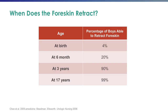A common question is when it is typical for the foreskin to retract in a child. Looking at this diagram, only four percent of foreskins will spontaneously retract at birth, whereas by three years of age 90 percent of foreskins will retract, and by 17 years of age 99 percent of foreskins will spontaneously retract.